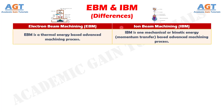Difference number 1: Electron Beam Machining is a thermal energy-based advanced machining process, whereas Iron Beam Machining is one mechanical or kinetic energy-momentum transfer-based advanced machining process.